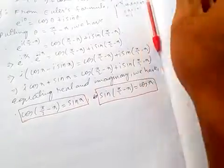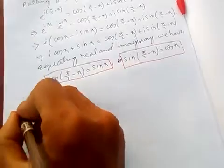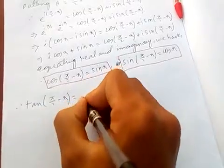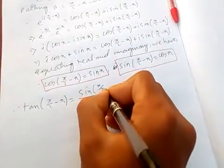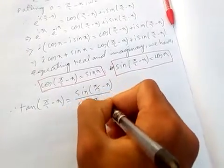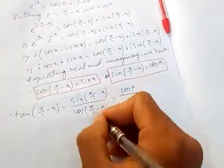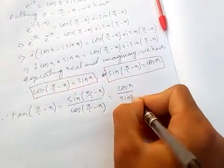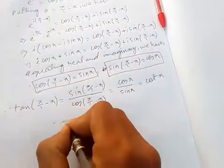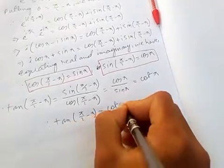Now let's prove tan(90-x). tan(90-x) is sin(90-x) over cos(90-x). Since sin(90-x) = cos x and cos(90-x) = sin x, we get cos x over sin x, which is cot x. Therefore tan(90-x) = cot x.